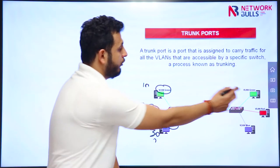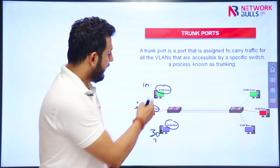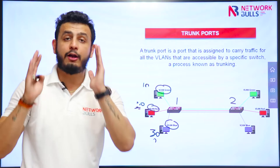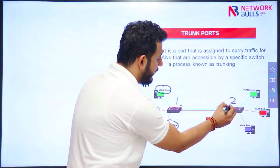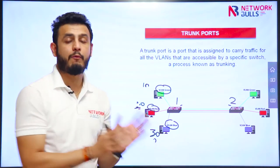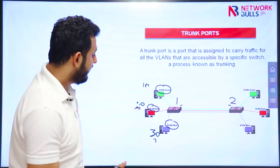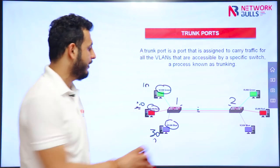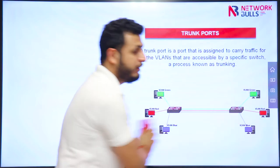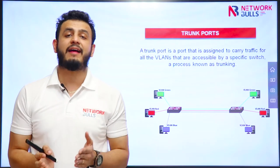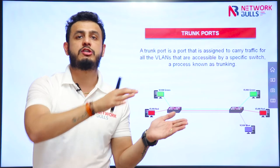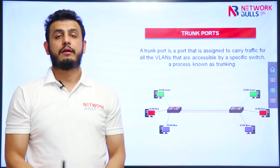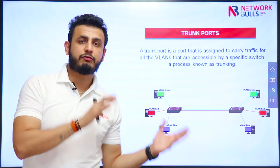If I want two users to communicate, I have to span VLAN 10 from switch 1 to switch 2. I need one port on each switch to be a member of VLAN 10. Similarly, I need a separate link for VLAN red and a separate link for VLAN blue. So with access ports, passing each VLAN between switches always requires a dedicated separate link.